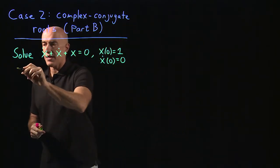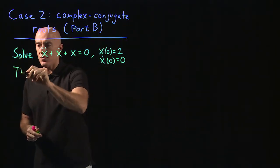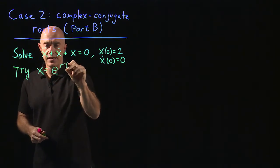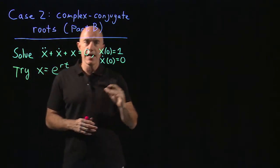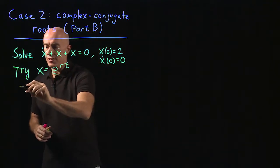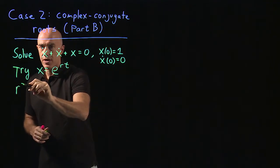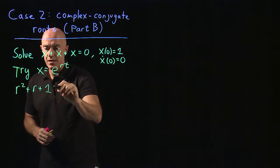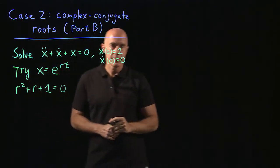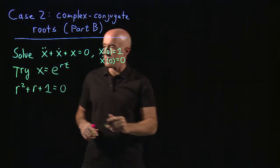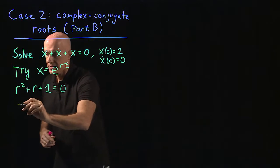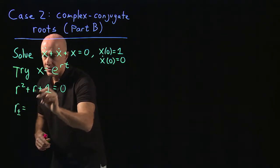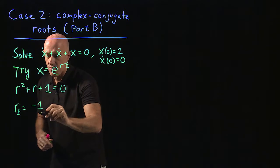We try our ansatz as always: x equals e to the rt. We get the characteristic equation r squared plus r plus one equals zero. We use the quadratic formula here, so r plus and minus equals negative b, which is negative one,